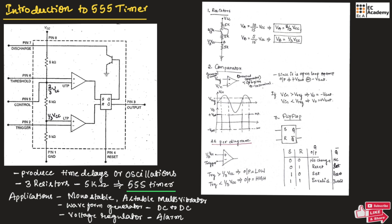The 3 resistors are connected from VCC to ground. We have 2 points, A and B, and we need to find the voltages across them using the voltage divider rule. For point A, the resistance below it is 5 kΩ + 5 kΩ = 10 kΩ, divided by the total 15 kΩ, multiplied by VCC. So VA = 10/15 × VCC = 2/3 VCC.